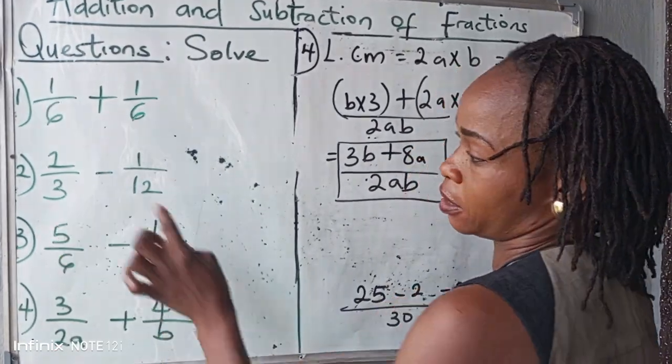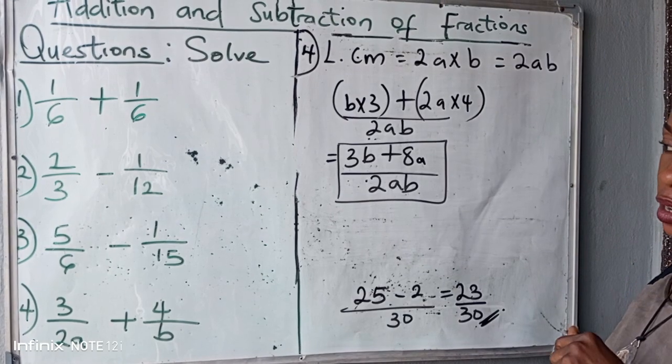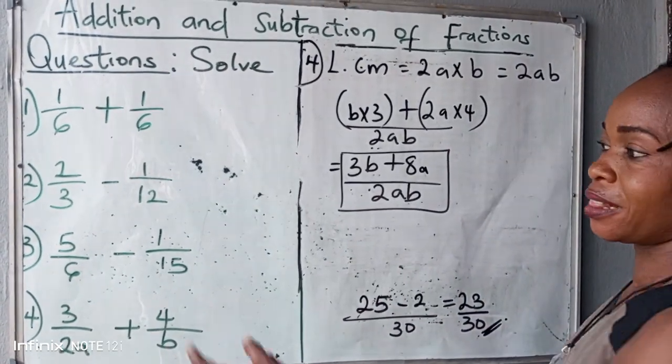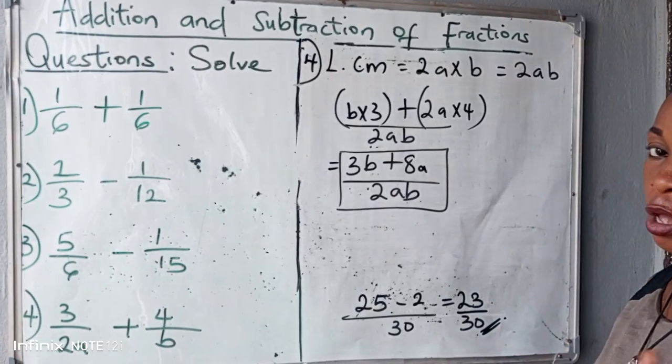Now, when you have two different numbers as your denominator, check. Is the bigger one a multiple of the smaller one? If yes, then pick the bigger one as your LCM. Continue solving.